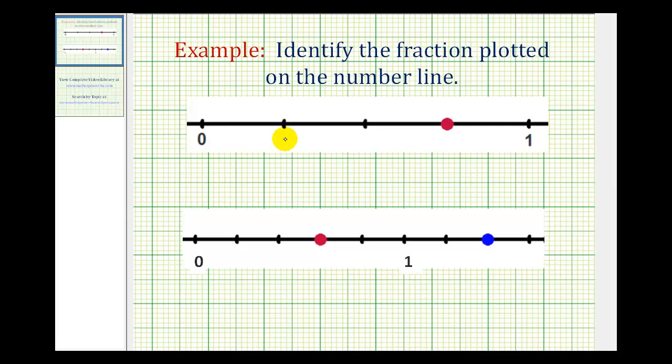So starting at zero, this would be one-fourth. This would be two-fourths, which does simplify to one-half. This red point would be three-fourths, the fraction we're looking for.